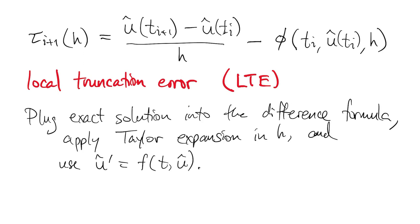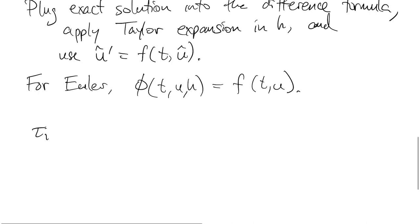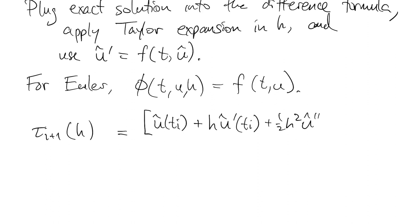Let's go through this for Euler's method, where phi is just f. The first term in the local truncation error is u hat at ti plus 1, and we expand that around time ti to get a power series in h.